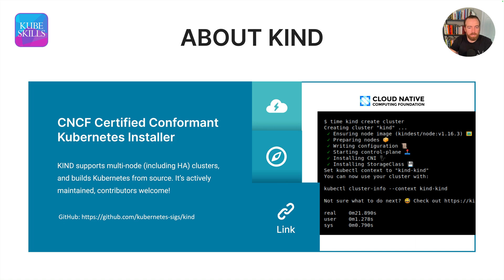Kind does have better support for migrating your local Kind Kubernetes cluster to something more production ready. You can scale this up to include high availability clusters — so multiple control planes, multiple nodes — and it easily scales to whatever size you want.